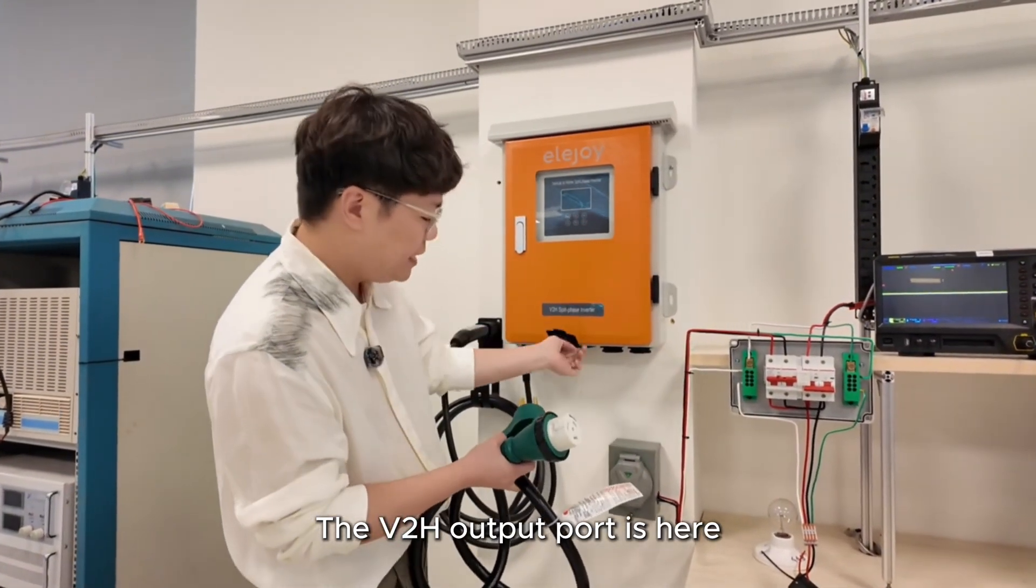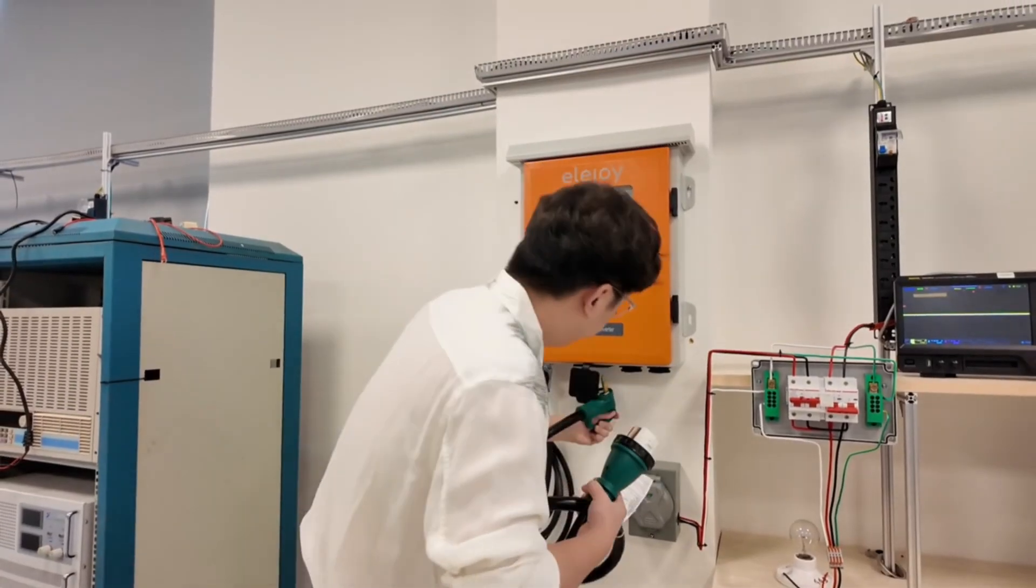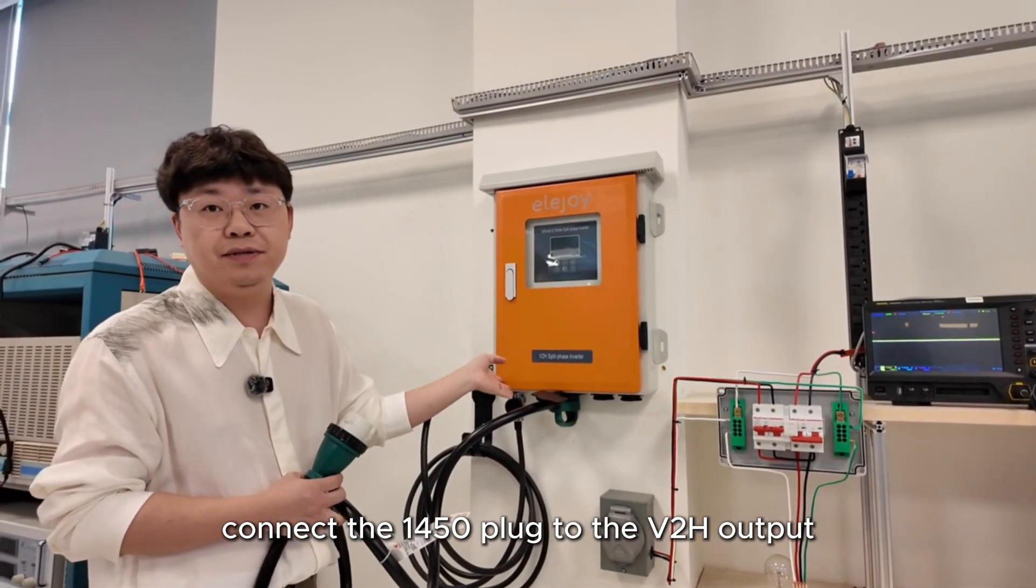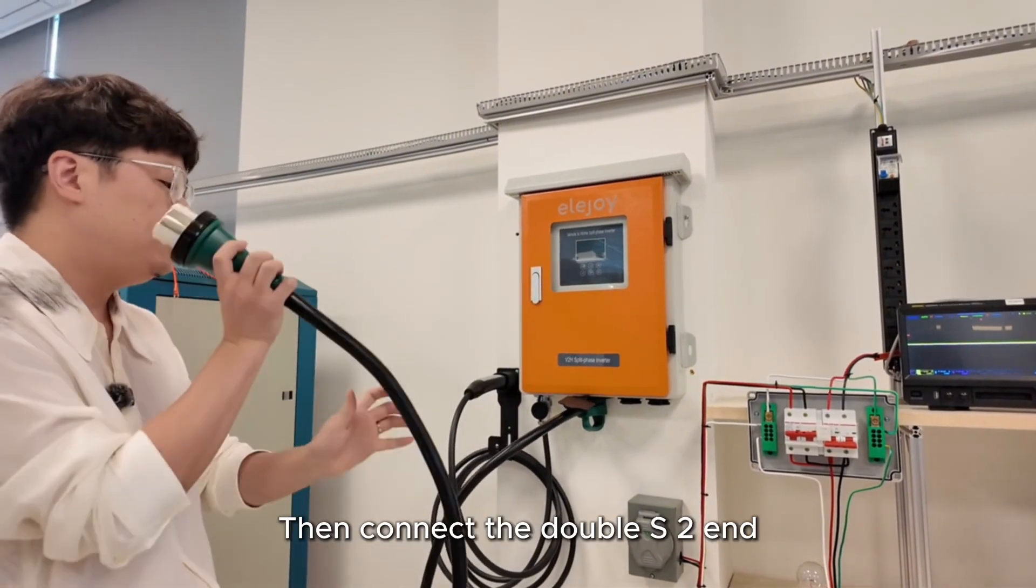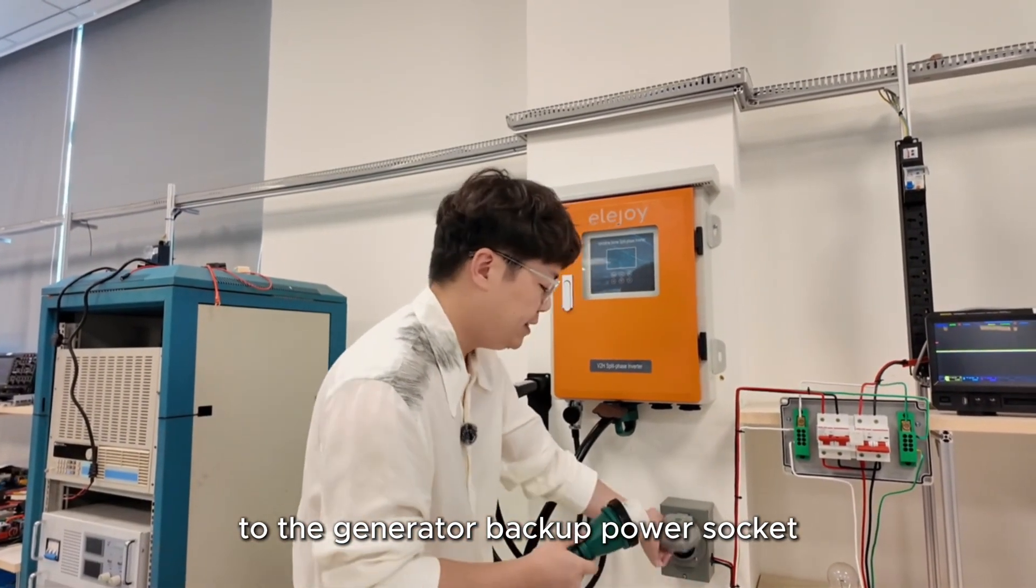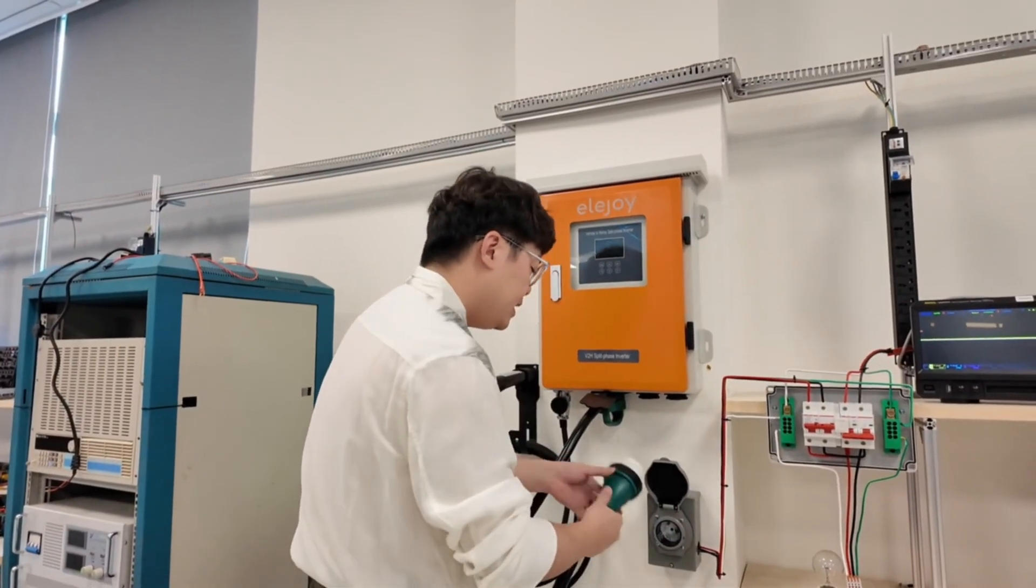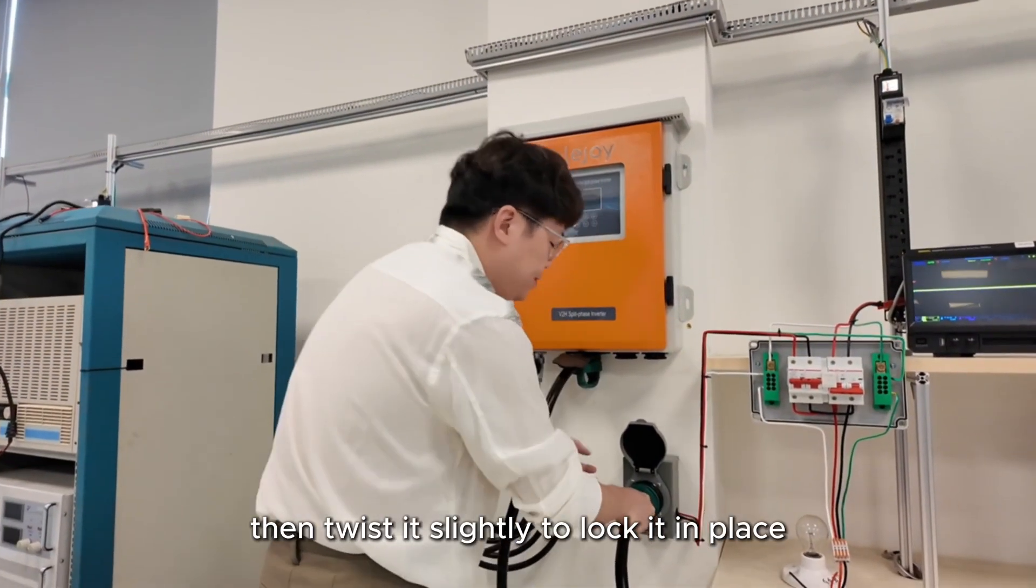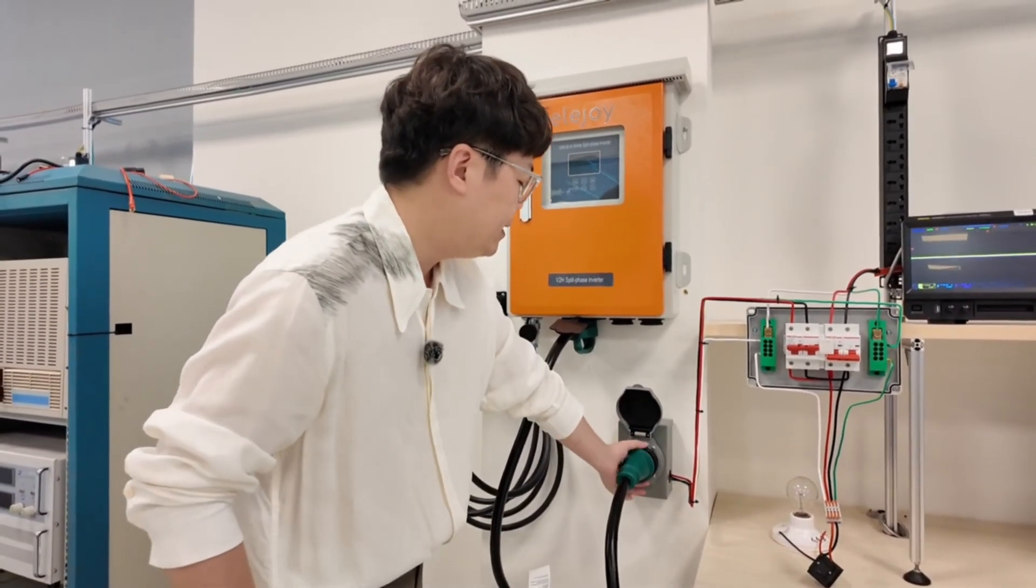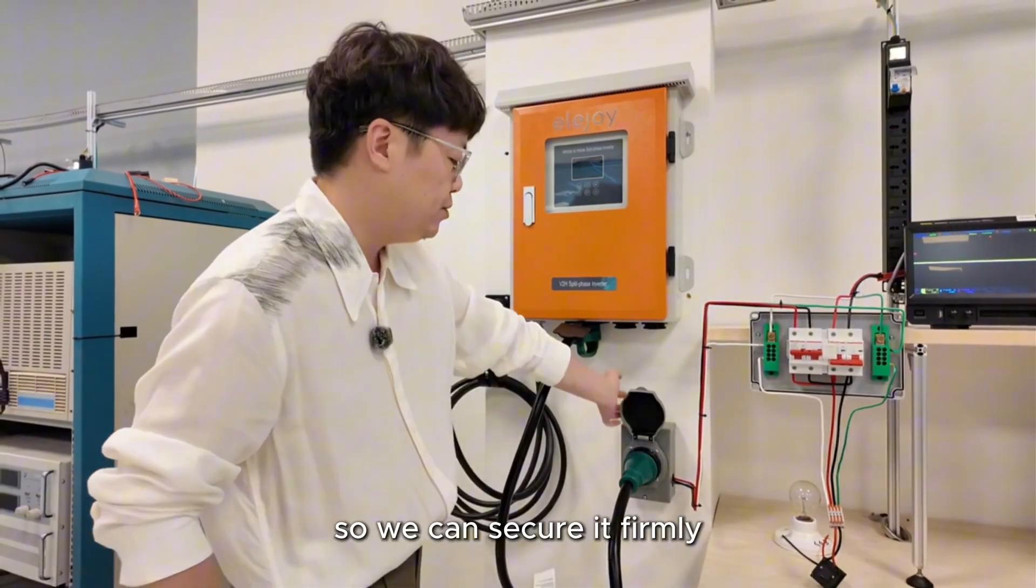The V2H output port is here. We'll now connect the 1450 plug to the V2H output and connect the SS2N to the generator backup power socket. Now we insert it, then twist it slightly to lock it in place. Then the output here also has a twist lock so we can secure it firmly.